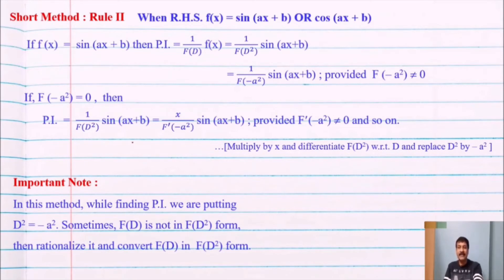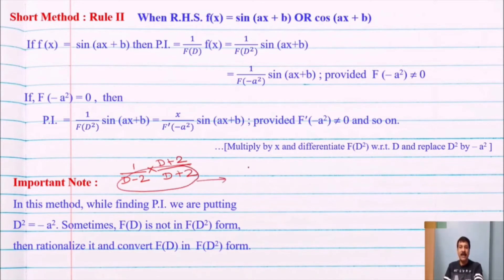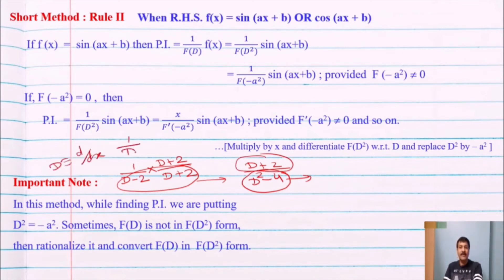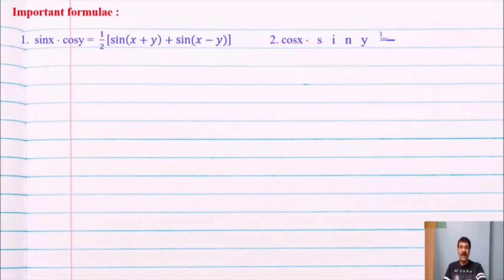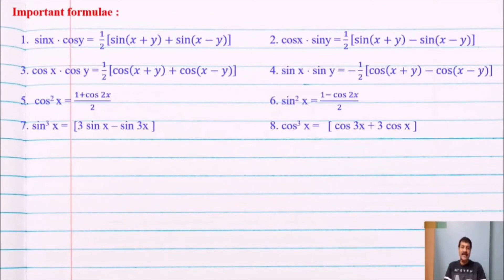Rationalization example: if we get 1/(D − 2), multiply and divide by (D + 2) to get (D + 2)/(D² − 4). Then replace D² by −a². Also remember: D in numerator means derivative, and 1/D means integration. You must also remember important trigonometric product formulas such as sin x cos y, cos x sin y, cos² x, sin² x, sin³ x, cos³ x.